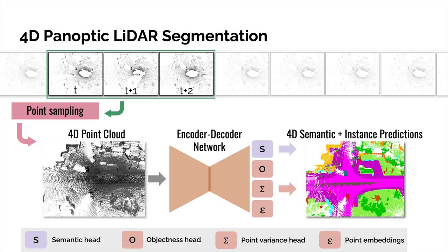The first head of the decoder outputs a semantic meaning for each 3D point. The objectness head is used to detect object instance centers within the 4D volumes, and we use point embeddings and variance heads to associate points to their respective instances. Spatial-temporal instance segmentation is thus posed as a clustering problem.